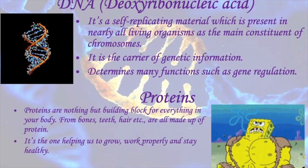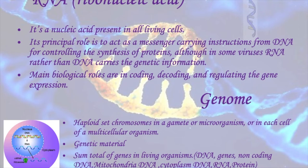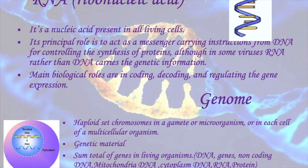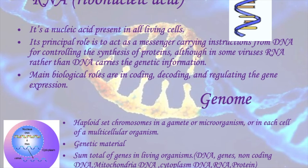RNA is a single-stranded molecule made up of adenine, uracil, cytosine, and guanine. For some organisms it acts as a carrier of genetic information, whereas in humans its principal role is as a messenger, carrying instructions from DNA for controlling protein synthesis. Its main biological roles are in coding, decoding, and regulating gene expression.